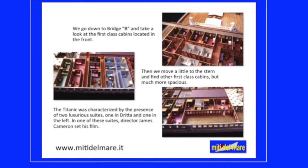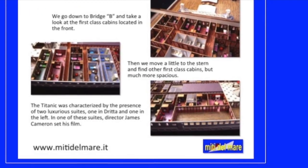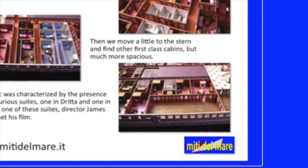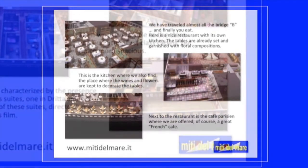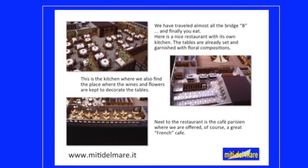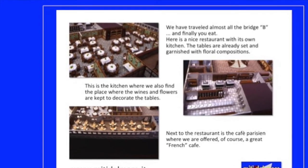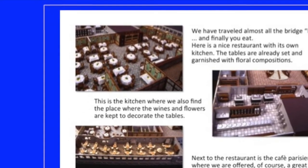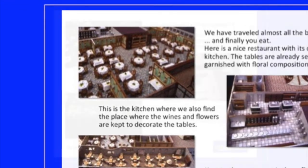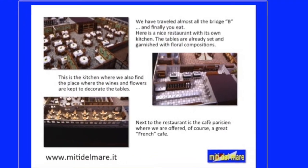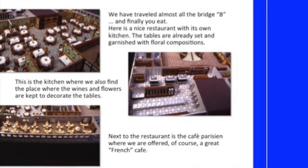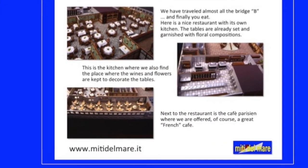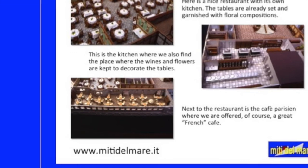The Titanic was characterized by the presence of two luxurious suites — one on the starboard side and one on the port side. In one of these suites, director James Cameron set his film. We have traveled almost all of Bridge B, and finally we arrive at the restaurant with its own kitchen. The tables are already set and garnished with floral compositions. Next to the restaurant is the Café Parisien, where we are offered, of course, a great French café.